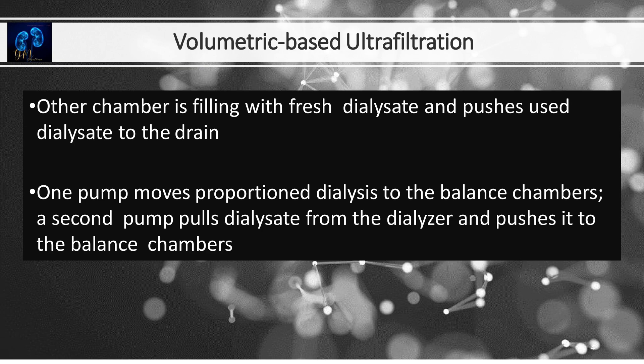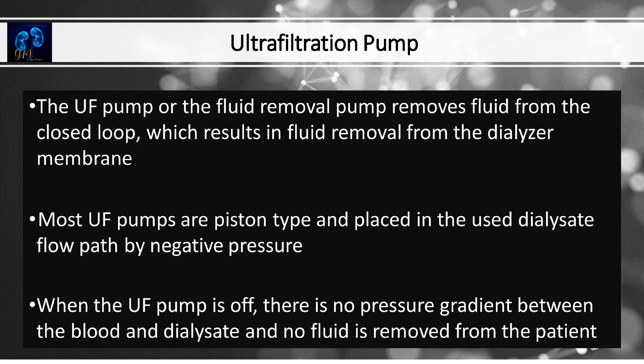One pump moves proportioned dialysate to the balancing chambers. A second pump pulls dialysate from the dialyzer and pushes it into the balancing chamber. The UF pump, or fluid removal pump, removes fluid from the closed loop, resulting in fluid removal from the dialyzer membrane. Most UF pumps are piston-type and placed in the used dialysate flow path. When the UF pump is off, there is no pressure gradient between the blood and dialysate, and no fluid is removed from the patient.